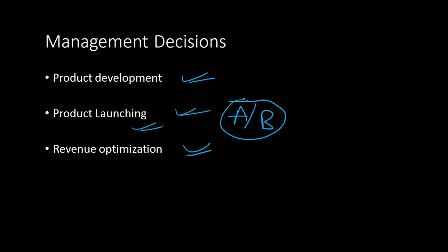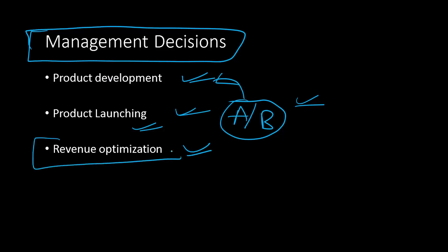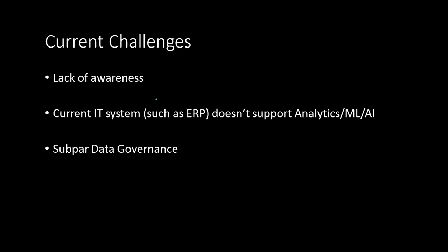A/B testing can be used for product development as well. Many e-commerce companies use them. All kinds of retailers can use A/B testing to come up with better decisions. Senior management can use advanced analytics to make better decisions. Revenue optimization is very important. Lots of ready-made or built-in algorithms are available for you to use them to optimize your revenue.